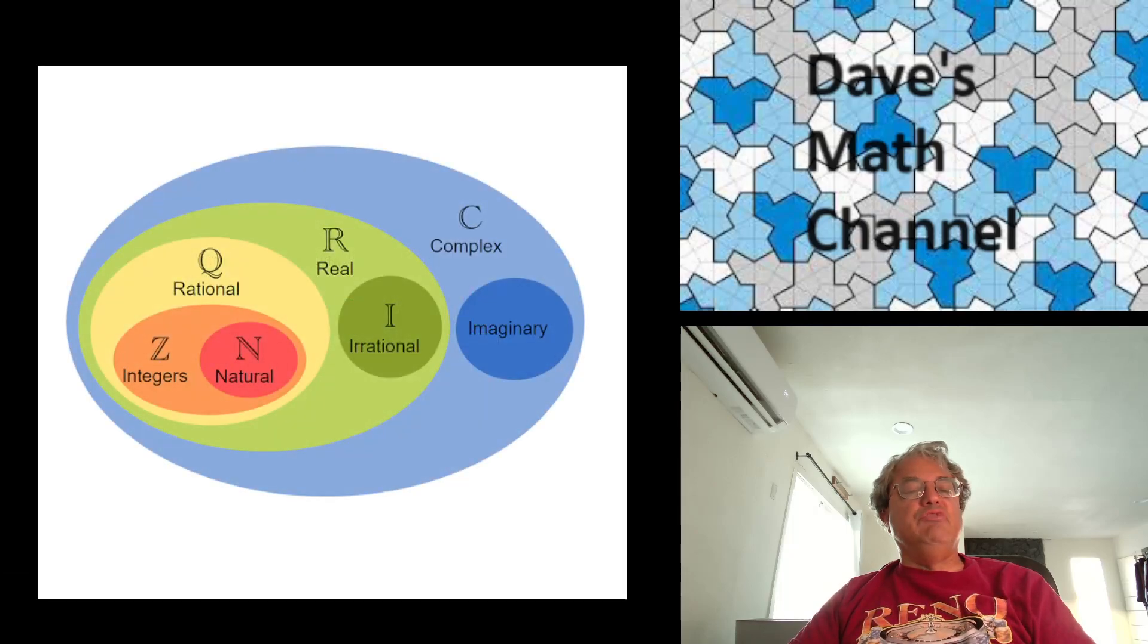And if you want to think of the complex numbers as a set of numbers, this is a useful picture. This is a Venn diagram showing various sets of numbers. It also kind of goes through the history. If we've looked at numbers over the centuries, if you look at the small red circle in the center, that's the natural numbers. Those are just the numbers starting with 0. Sometimes people start with 1. But 0, 1, 2, 3, 4, sometimes they're called counting numbers.